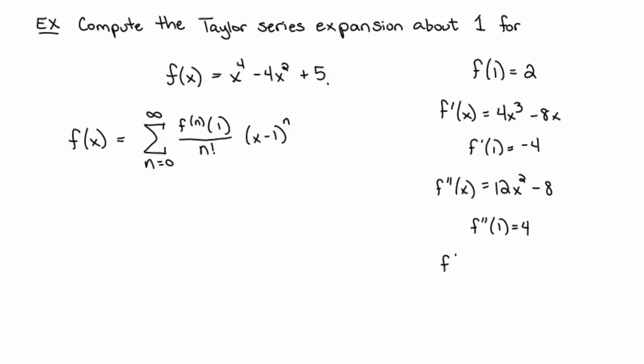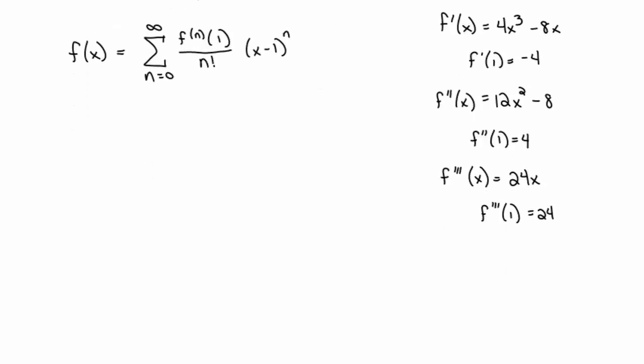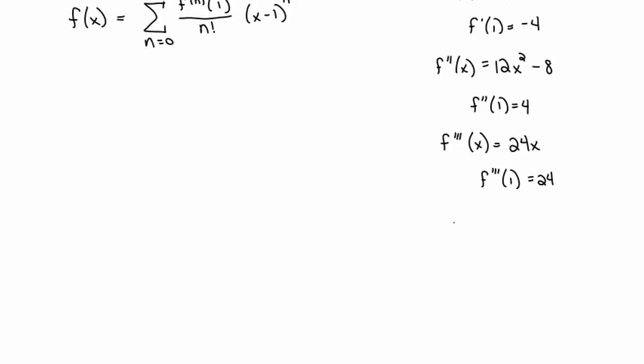And then f triple prime of x is equal to 24x, and so f triple prime at one is 24. You should probably check my math as we move forward, just because I could easily scroll through and make a minor mistake here. The fourth derivative of the function at x is 24, and so therefore the fourth derivative at one is 24.